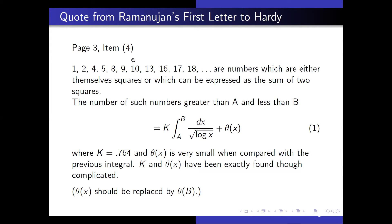This is one of the first entries from Ramanujan's first letter to Hardy. It indicates Ramanujan's interest in sums of squares. The numbers 1, 2, 4, 5, 8, 9, 10, 13, et cetera, are either perfect squares or can be expressed as a sum of two squares.